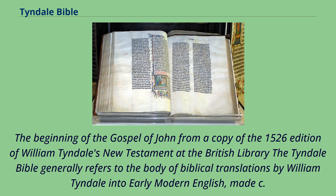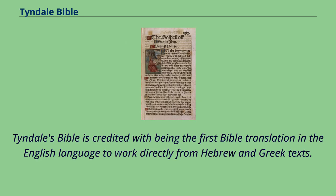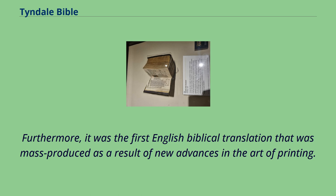The beginning of the Gospel of John from a copy of the 1526 edition of William Tyndale's New Testament at the British Library. The Tyndale Bible generally refers to the body of Biblical translations by William Tyndale into early modern English, made c. 1522–1536. Tyndale's Bible is credited with being the first Bible translation in the English language to work directly from Hebrew and Greek texts. Furthermore, it was the first English Biblical translation that was mass produced as a result of new advances in the art of printing.